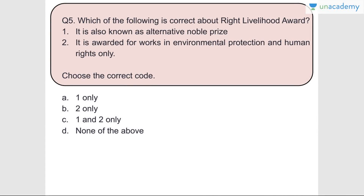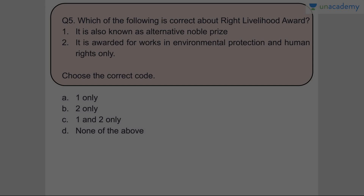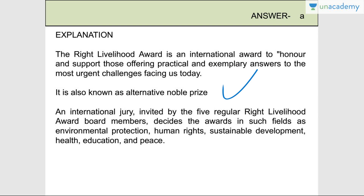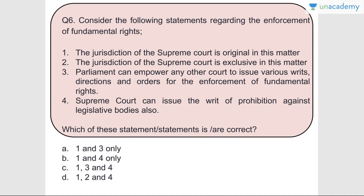Question number five: Which of the following is correct about the Right Livelihood Award? Statement one - it is also known as the Alternative Nobel Prize - correct. Statement two - it is awarded only for works in environmental protection and human rights - wrong. Answer is A, one only. The Right Livelihood Award is an international award to honor those offering practical answers to the most urgent challenges facing us today, covering fields such as environment protection, human rights, sustainable development, health, education, and peace.